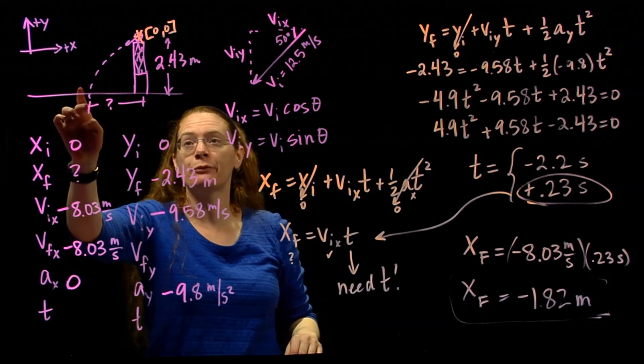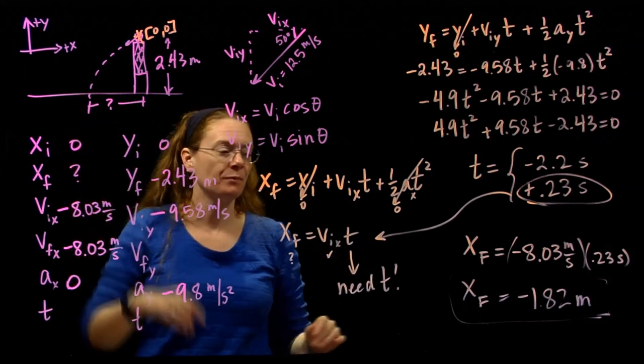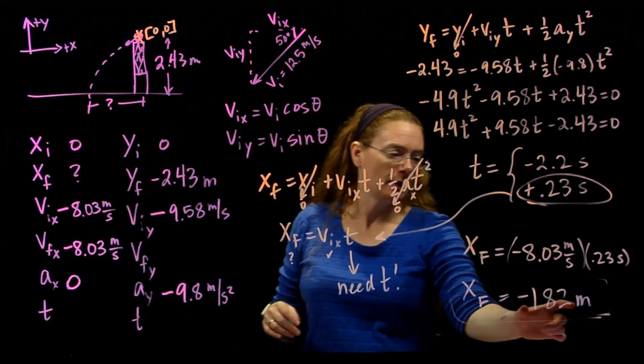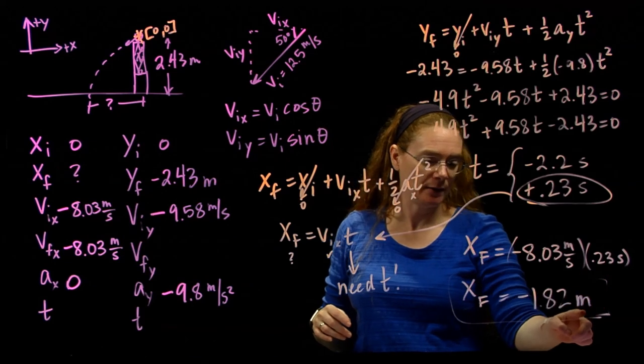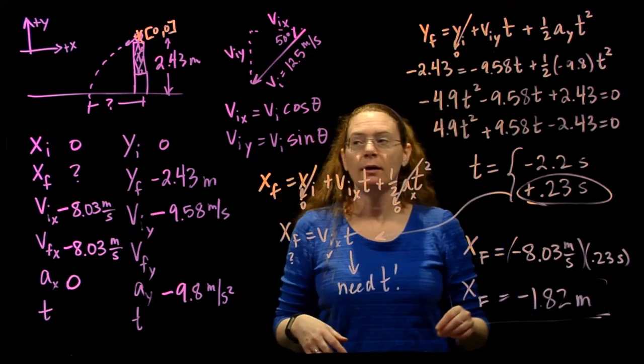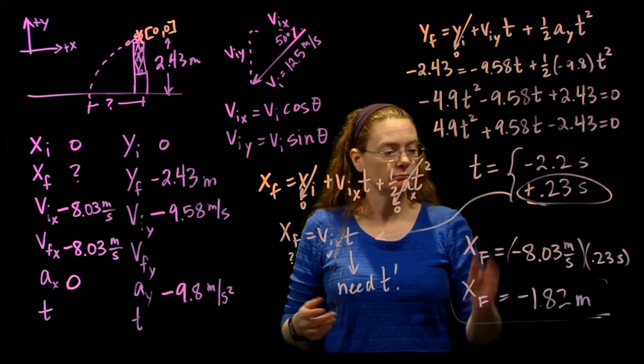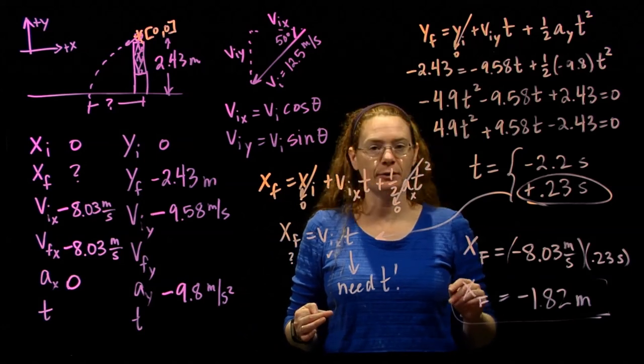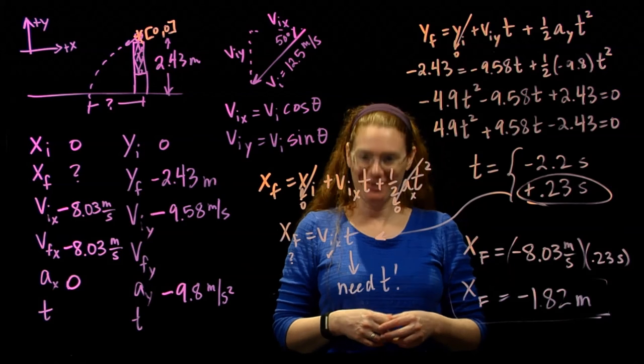It tells me I ended up left of my origin, which is what I want. So the negative makes sense. That makes sense. The units make sense. Did we answer the question? Well, the question was, how far horizontally from the net does it hit the floor? It hits 1.8 meters to the left of the net. We've answered the question. Alright. Good job.